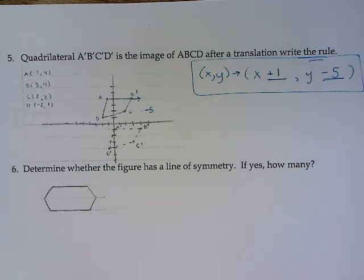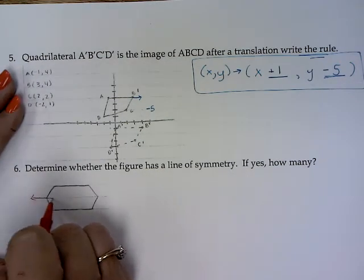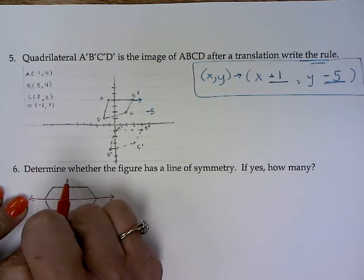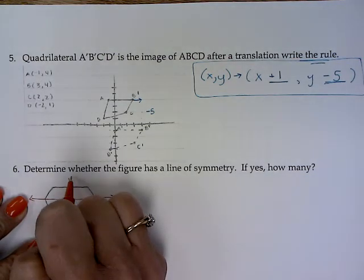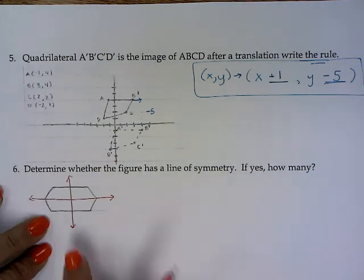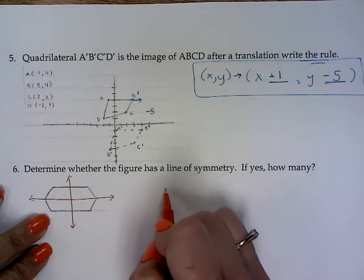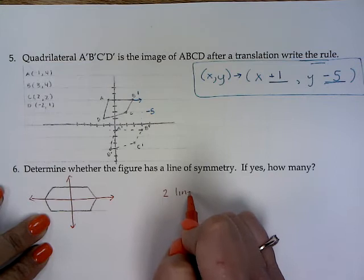Okay, I want to determine whether this figure has a line of symmetry. If it does, how many? Remember, with a line of symmetry, it's going to come through my figure, and it's going to be able to map on top of itself. Which means here, if I draw this line, and I fold over this hexagon, it will map on top of each other. If I draw it right here, it will map on top of each other. If I try to draw a diagonal, it wouldn't fit, so it has two lines of symmetry.